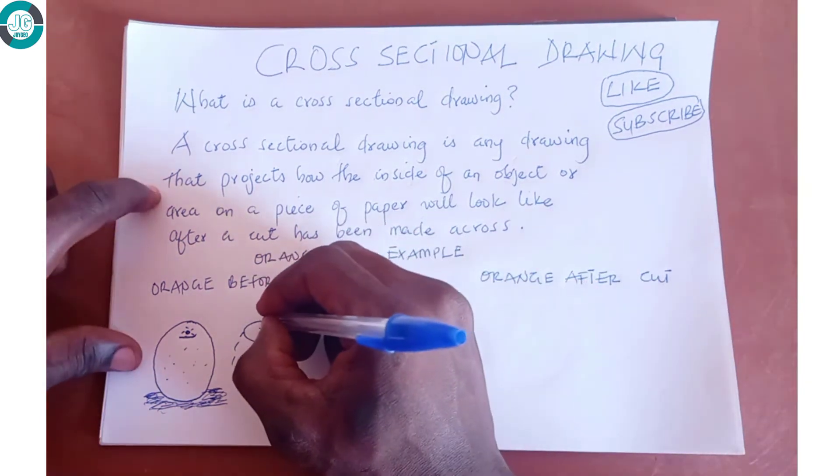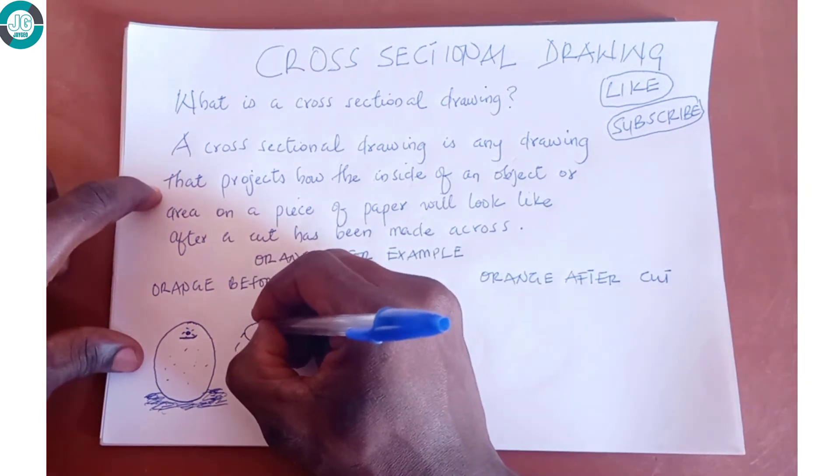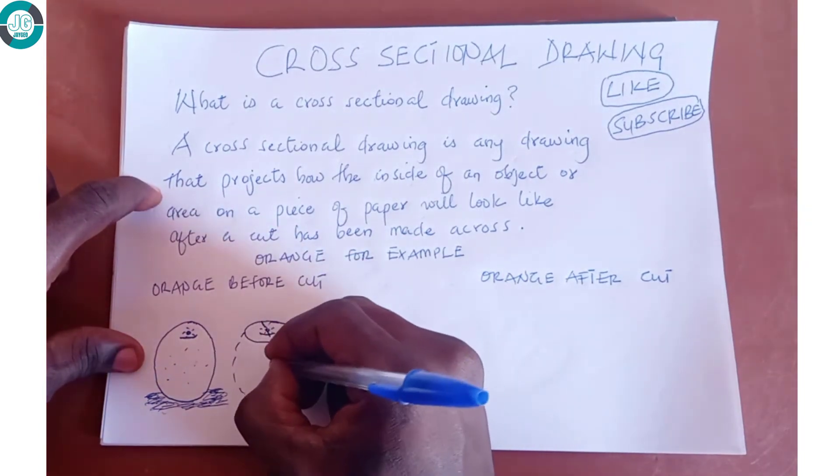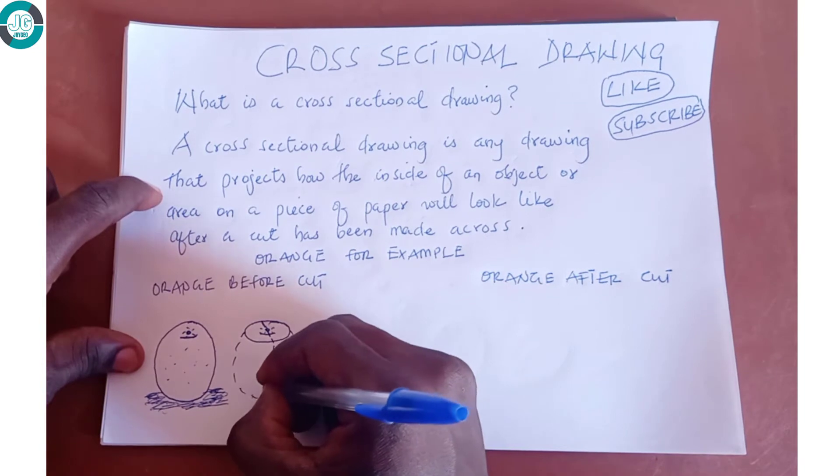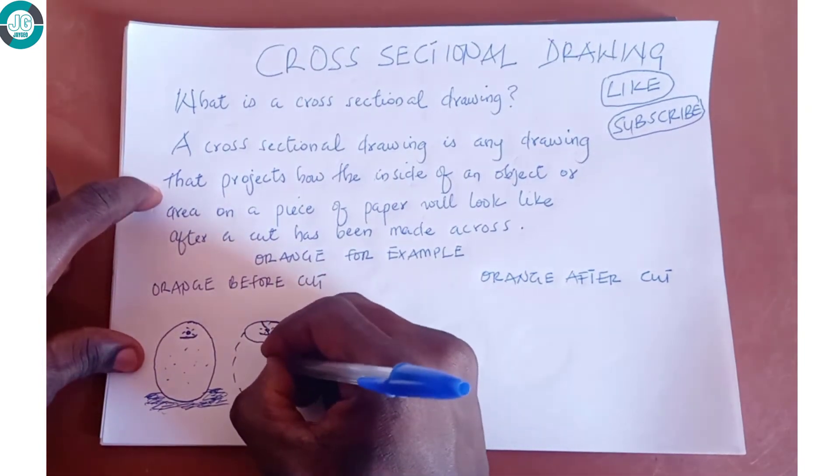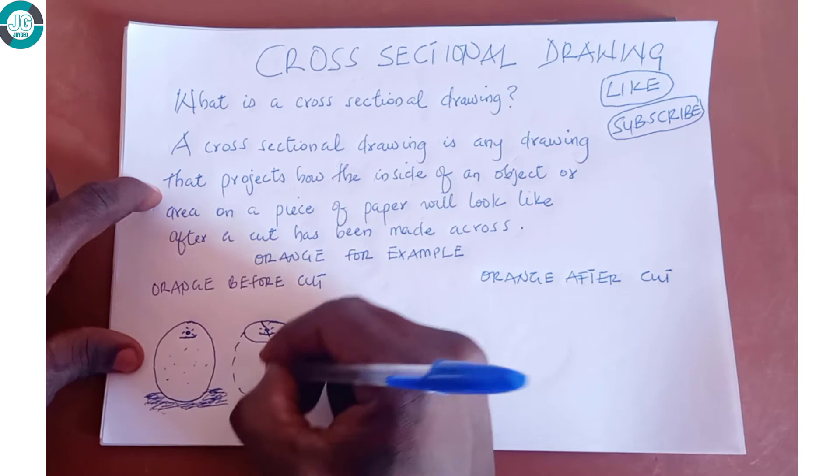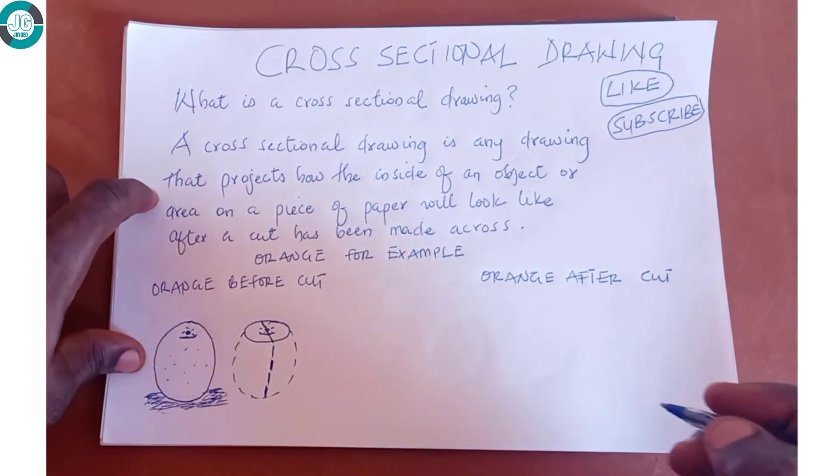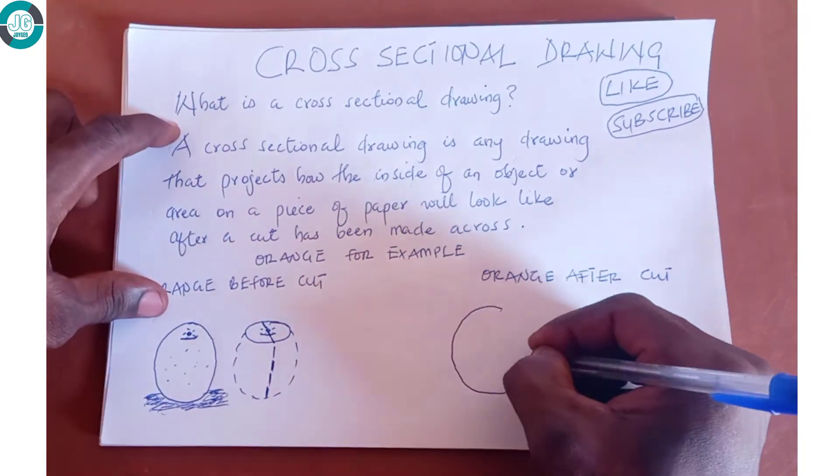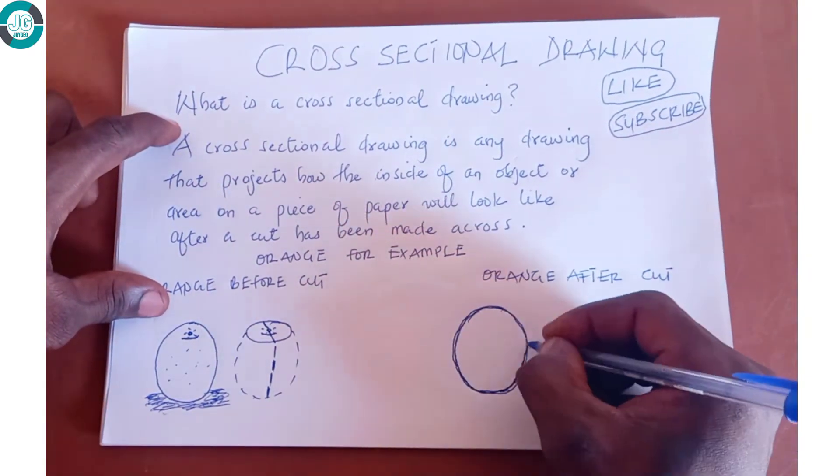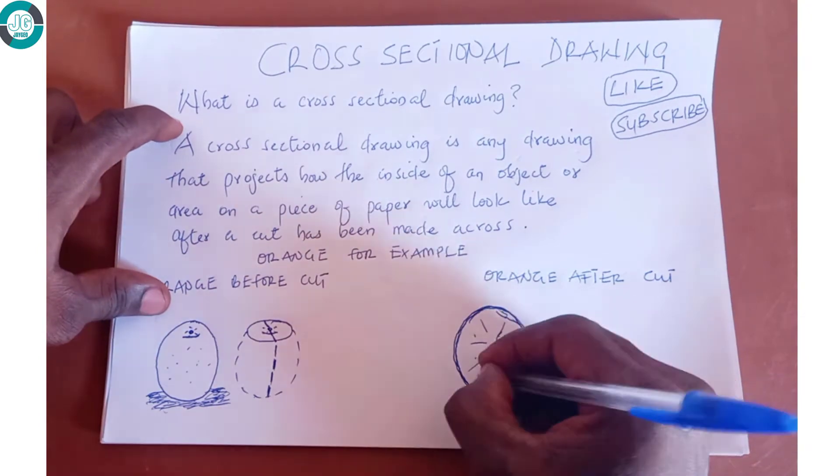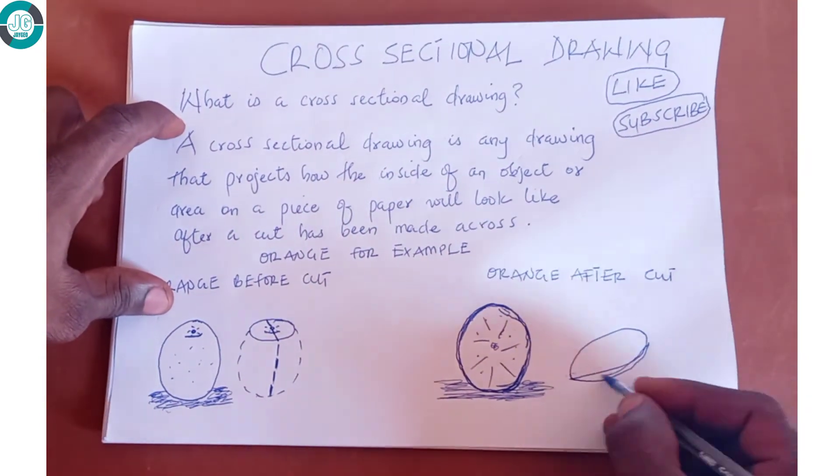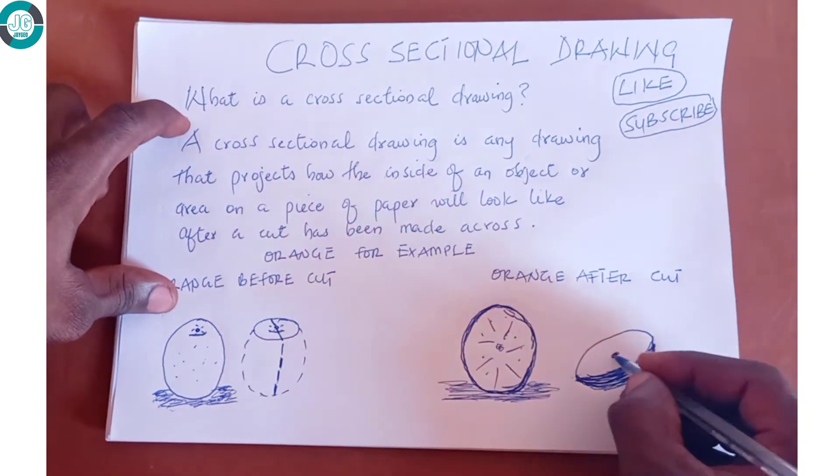To see one side of the full orange, a cross-section has to be made. We will have to take a knife and cut this orange from the top part to the bottom. This is how the orange would look afterwards, with the other half somewhere here.